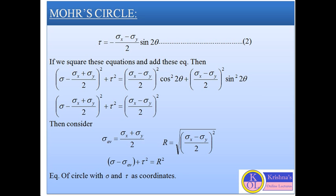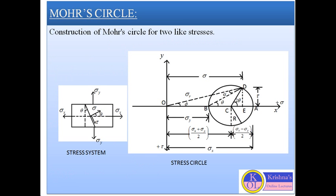The radius of the circle is (1/2)(sigma x − sigma y) and its center has coordinates sigma = sigma_average and tau = 0. So we can represent the normal stresses and tangential stresses through Mohr's circle.